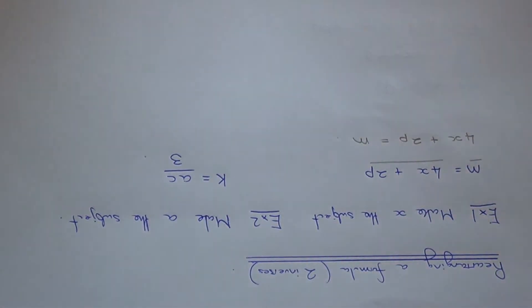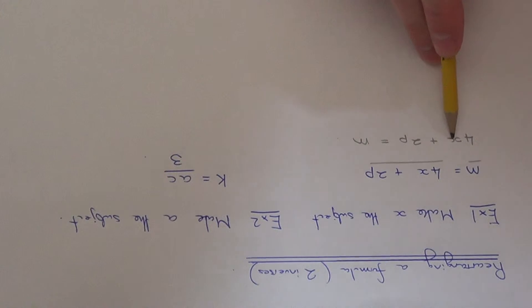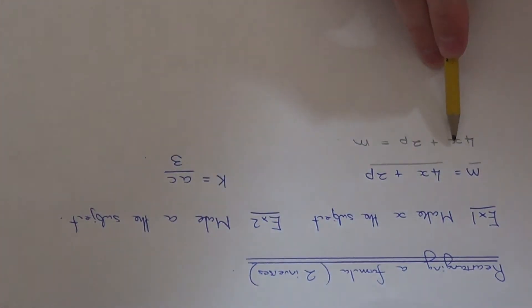All we need to do now is do our inverses so we can make x the subject. If you look on the left hand side of the formula, we need to see what is happening to x. First of all it's being multiplied by 4 and then we add on 2p.